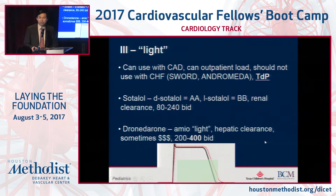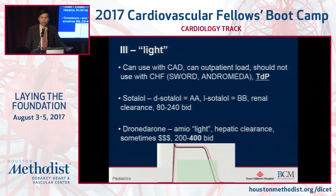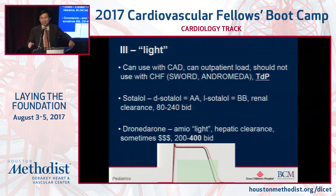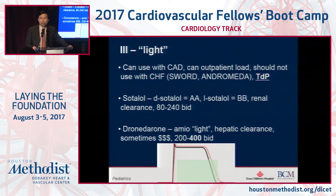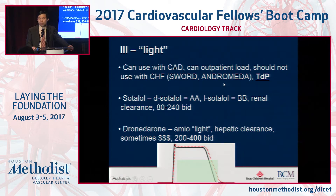Let's shift gears and talk about the class III agents. There are four relevant oral agents and one IV. Of the four oral agents, I classify two as light and two as heavy. The two class III light agents are sotalol and dronedarone. I like them because they can be started orally as an outpatient — dronedarone more typically, sotalol if there's no major structural heart disease. You can use them in coronary artery disease, but you should not use them in congestive heart failure, based on the SWORD trial for sotalol and ANDROMEDA for dronedarone. They do have a mild torsadogenic potential.